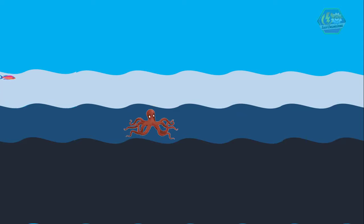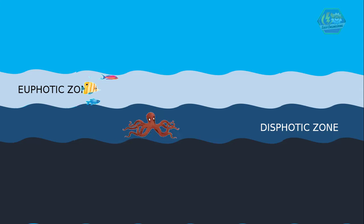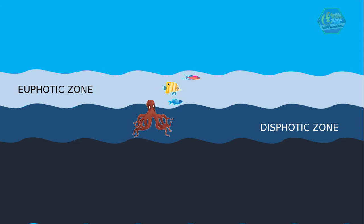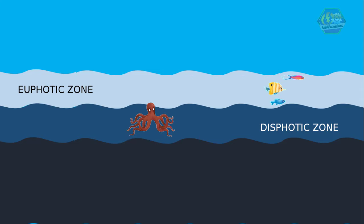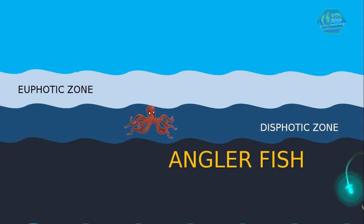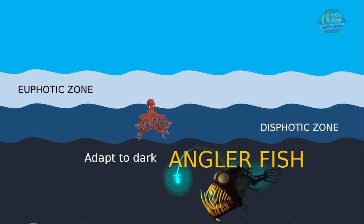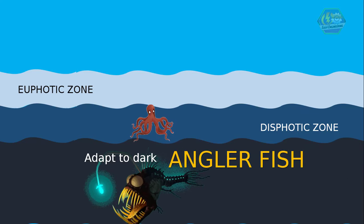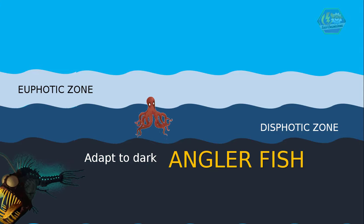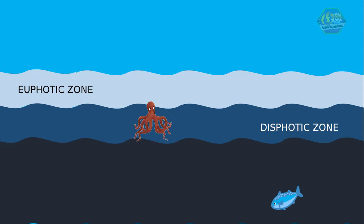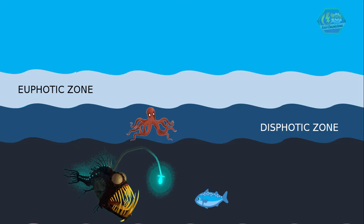Most marine animals stay in the euphotic and dysphotic zones where they have access to plants and other ocean animals to eat. But deep down below the layers there is life too, and they might look like the weirdest animals on earth. One example is the anglerfish — it adapts to the darkest side of the ocean. In fact, the anglerfish creates its own light to lure its prey, and when it gets close, the anglerfish gobbles it up in the blink of an eye.